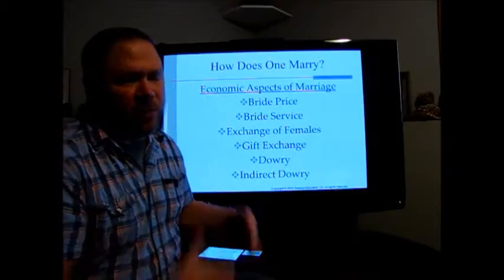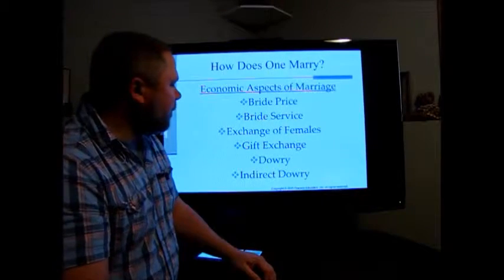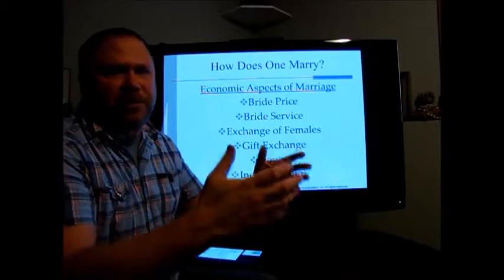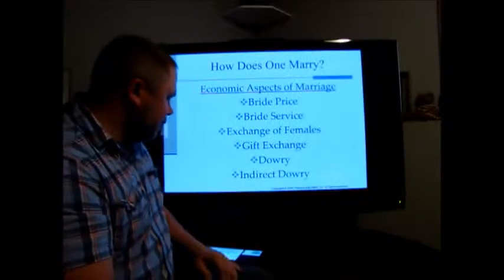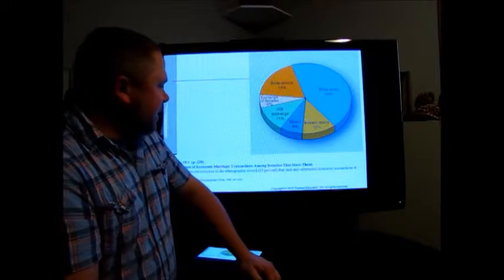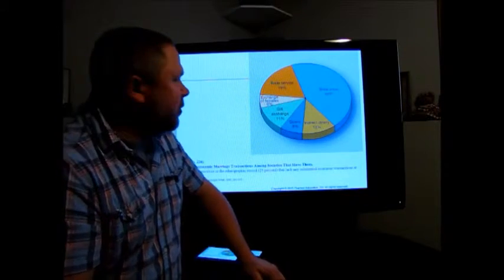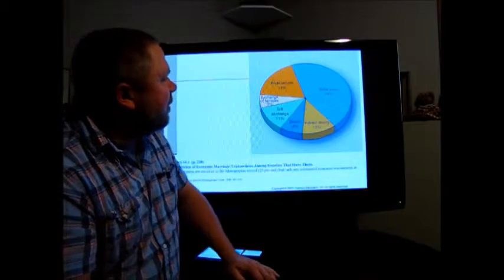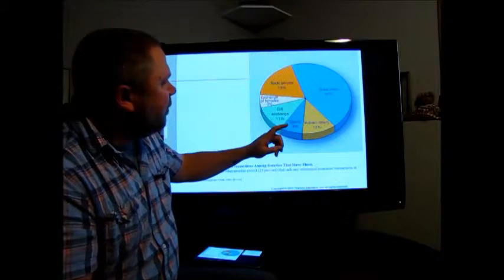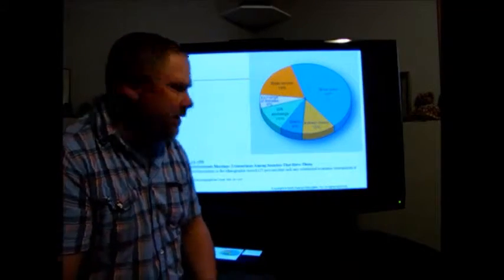Dowry refers to gifts given to the bride, while indirect dowry is where gifts are given to the parents first and then passed to the bride or couple. Looking at the breakdown of how often these practices occur — in non-Western, non-commercial societies — bride price is the most common, then bride service, then indirect dowry, gift exchange, dowry, and exchange of females is relatively uncommon.